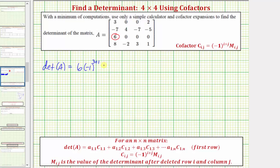The minor is the determinant formed by eliminating the row and column of this element. To form the determinant, we'll eliminate row three column one, which will give us a three by three determinant.